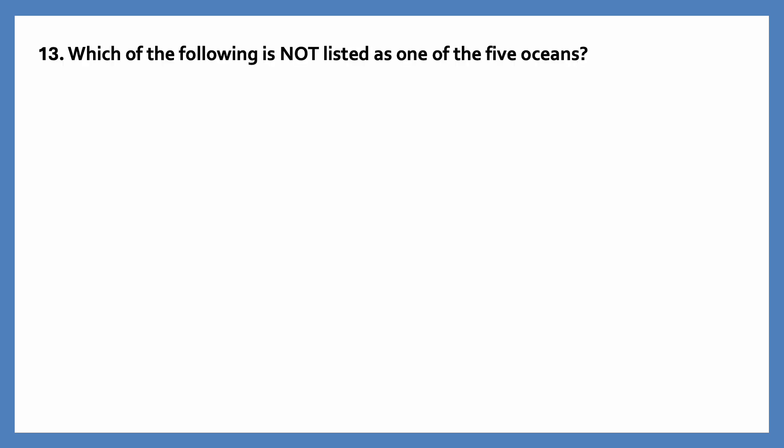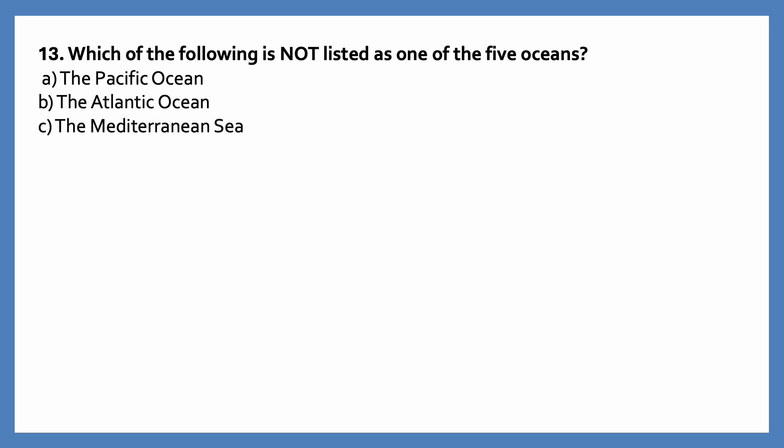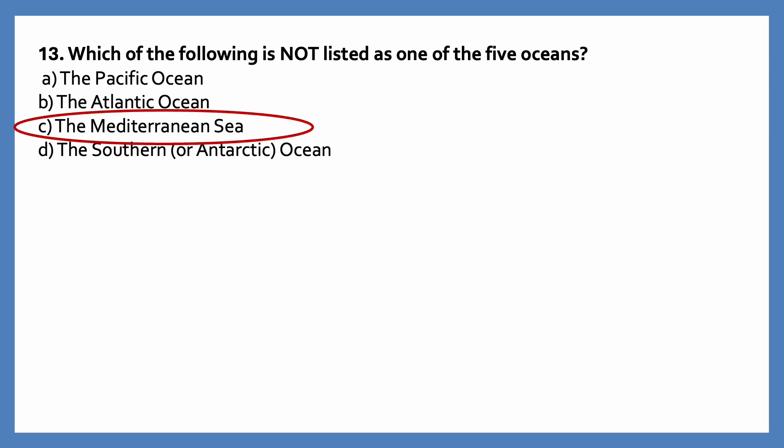Which of the following is not listed as one of the five oceans? Options are: the Pacific Ocean, the Atlantic Ocean, the Mediterranean Sea, the Southern or Antarctic Ocean. The correct answer is the Mediterranean Sea — it is not listed as one of the five oceans.